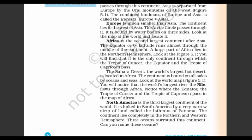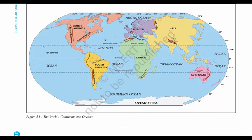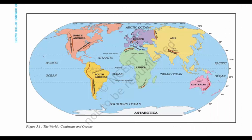Coming to Europe, it is much smaller, and part of the Arctic Circle also passes through it. It is also bound by water bodies on three sides: the Arctic Ocean on top, the Atlantic Ocean towards the left side, and the Mediterranean Sea — and behind it is the full part of Asia.